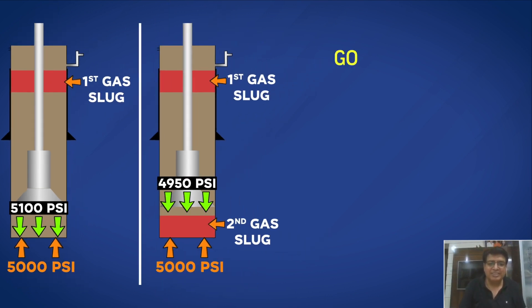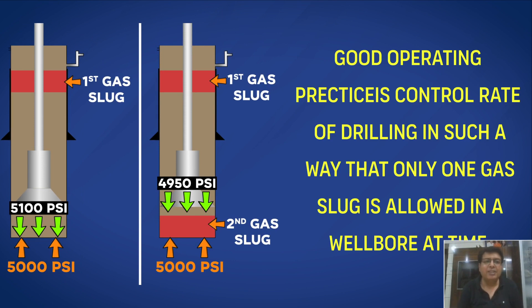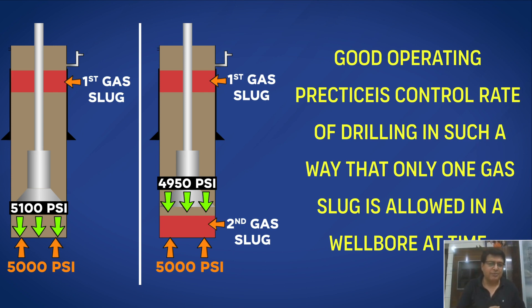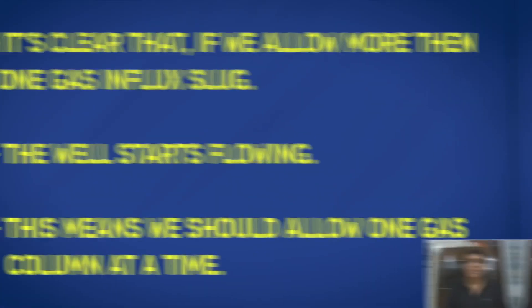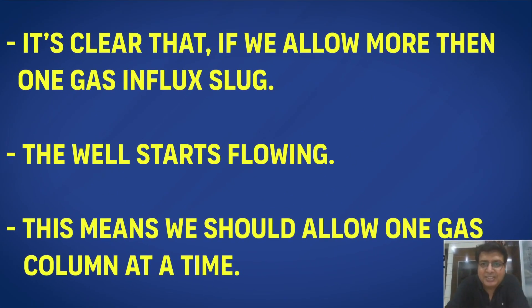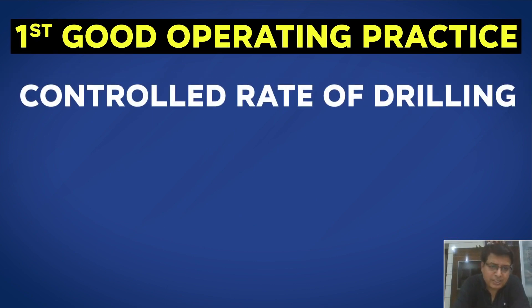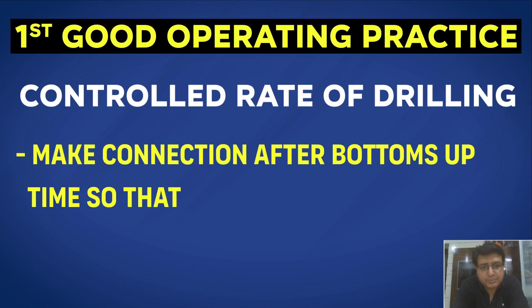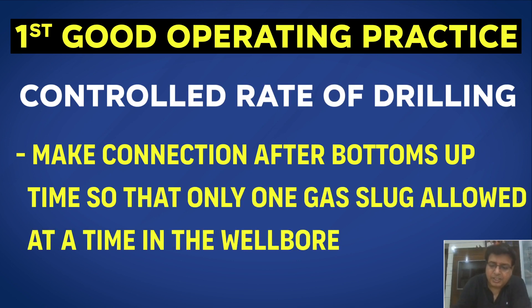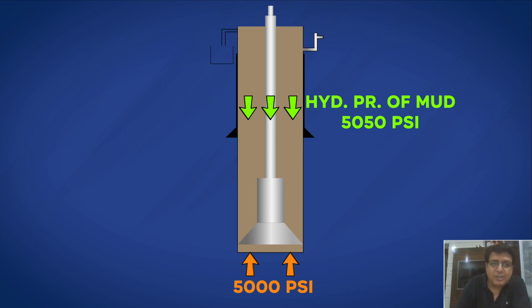The learning outcome is the first good operating practice: when I allow only one column of gas, the hydrostatic pressure plus APL still manages to be above formation pressure and I still have 100 psi of overbalance. Good operating practice is to control the rate of drilling such that only one gas column is allowed in the wellbore at a time. This means I should make a connection after bottoms-up time so that only one gas column is allowed.